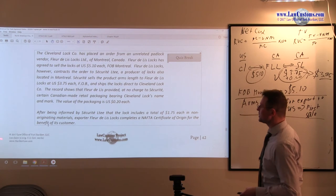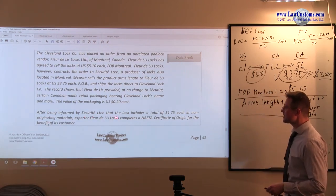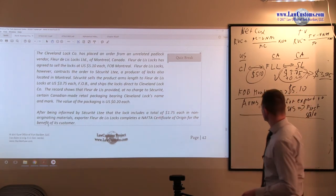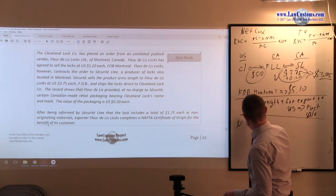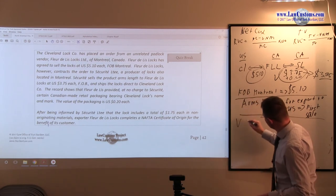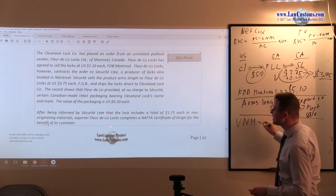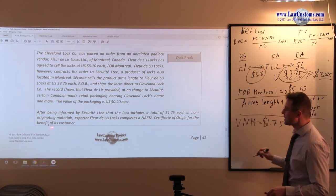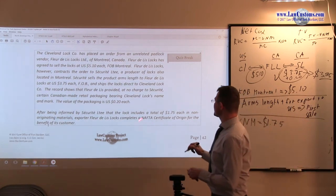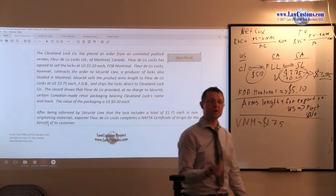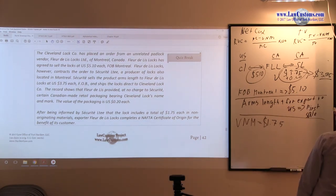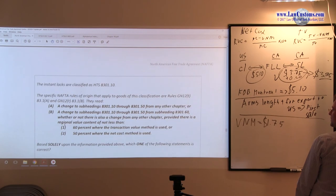Alright. So, let's keep on reading. After being informed by SL that locks includes a total of $1.75 each of non-originating materials. So, we have non-originating materials, or let's use the standard V value of non-originating materials is $1.75. Exporter, FLL, completes NAFTA certificate of origin for the benefit of the customer. So, we are good. Form 434 must be made by the exporter. So, so far we are in compliance.